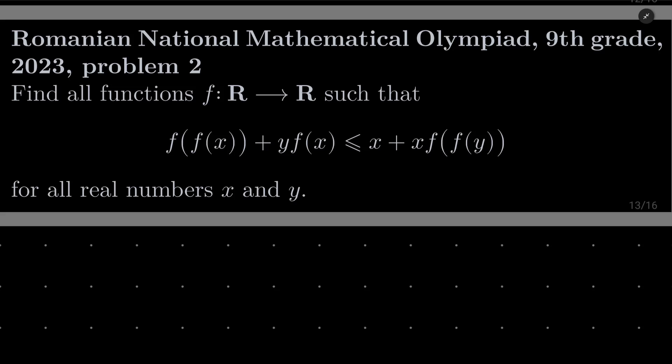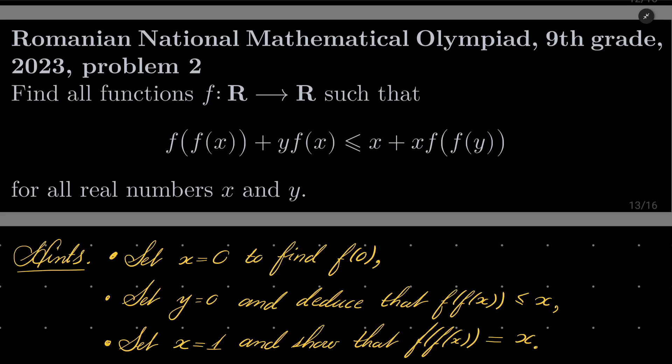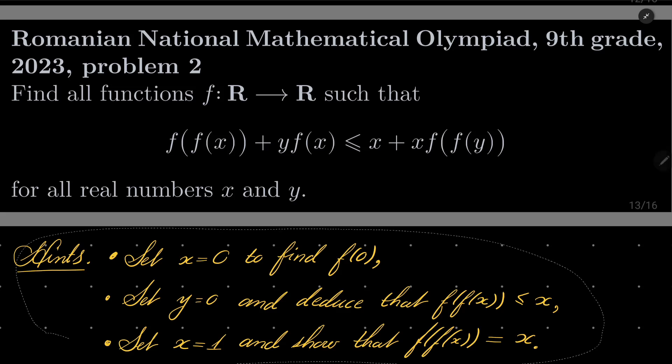Here are my hints for this problem. First, set x to be 0 and find f(0). Then set y to be 0 and deduce from that that f(f(x)) must be less than or equal to x. And finally, set x to be 1 to show that f(f(x)) equals x, and that should be sufficient to finish this problem. So give it a try and I will see you in just a minute.